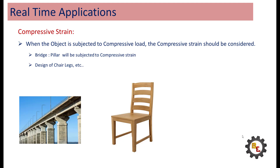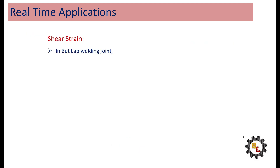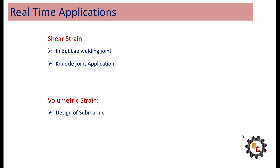Examples of compressive strain: pillars of a bridge, design of chair and table legs, etc. Shear strain will be produced due to shear load. Examples: lap joint of welding, knuckle joint, counter joints, etc. Volumetric strain is produced on the object when force is acting in all directions. Examples: design of submarine, design of underground buildings.